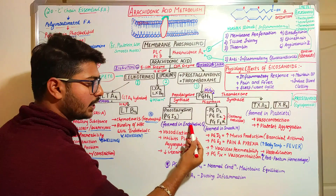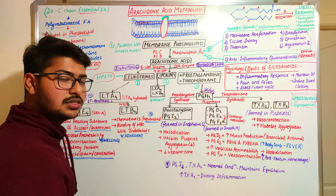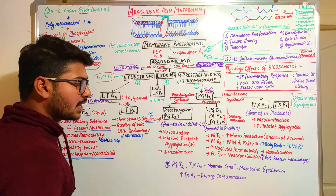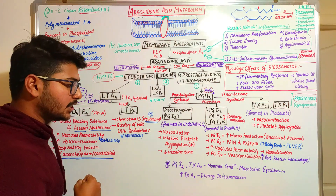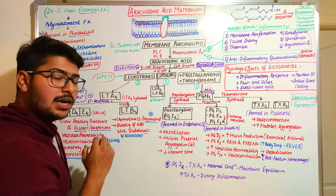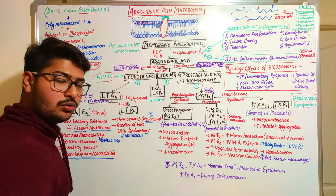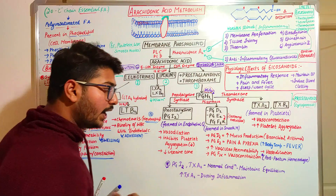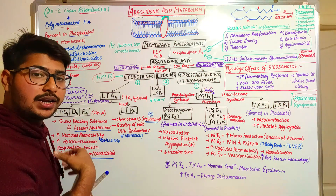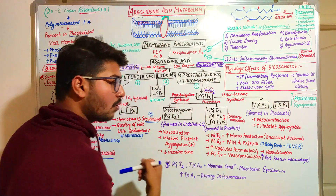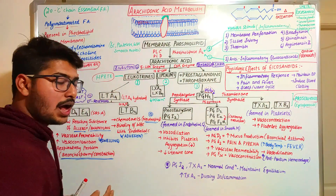These reactions occur in different cells: prostacyclin synthase in endothelial cells, prostaglandin D/E synthase in smooth muscles, and thromboxane A2/B2 in platelets. The leukotriene pathway occurs in leukocytes. Now let's see the functions of these mediators separately. Prostaglandin I2 is a vasodilator, inhibits platelet aggregation, and in the female reproductive system, decreases uterine tone.